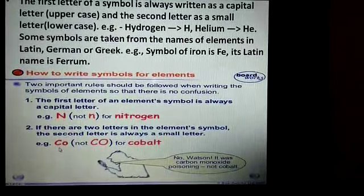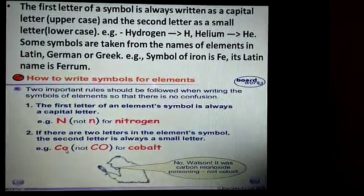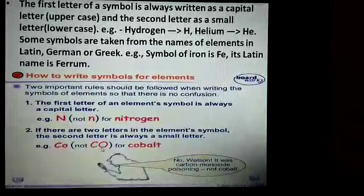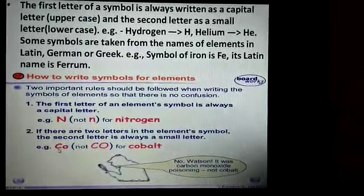For example, for cobalt, it's capital C and small O. Not both the letters in capital. This is wrong. The correct one is capital C and small O.